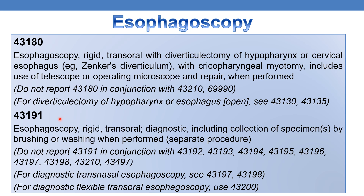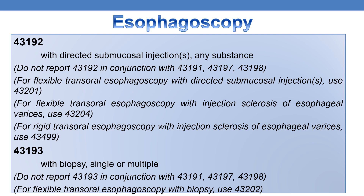CPT 43191 deals with esophagoscopy, rigid, transoral, diagnostic, including collection of specimen by brushing or washing when performed. CPT 43192 deals with esophagoscopy, rigid, transoral, with directed submucosal injection, any substance. Do not report 43192 in conjunction with 43191, 43197, and 43198.